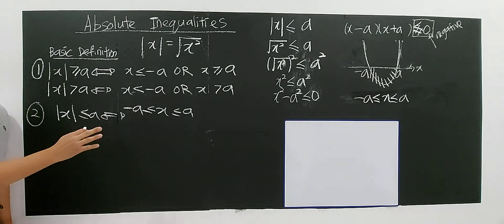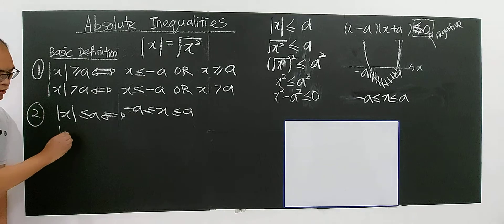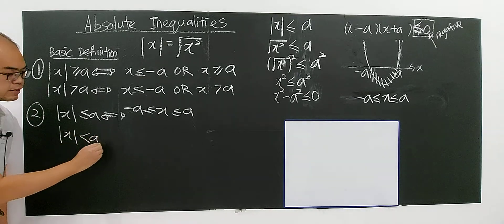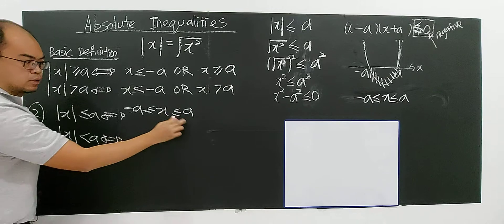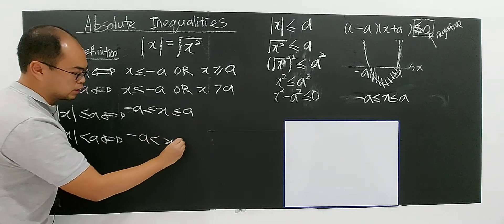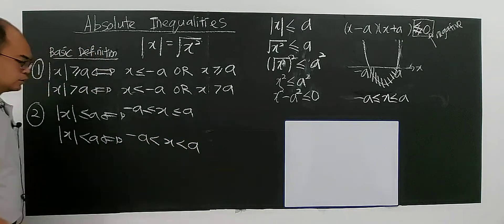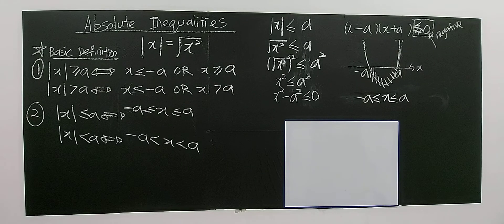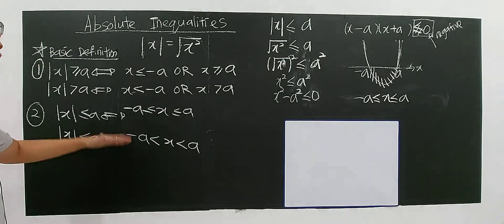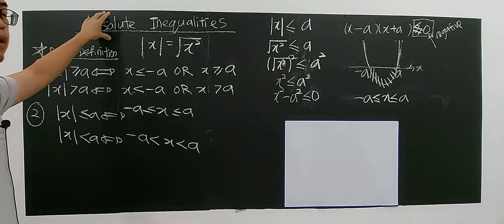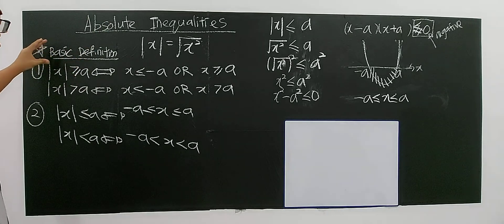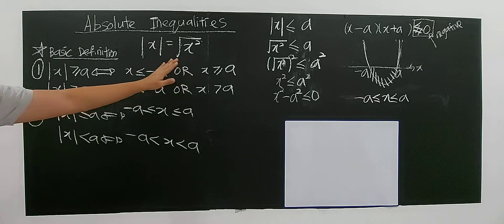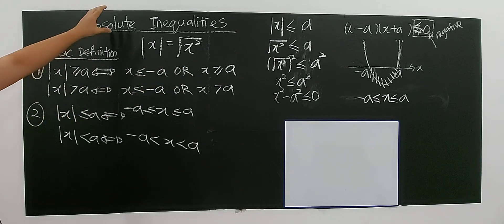This is a very important result. You have to study this. For modulus x less than or equal to a, the result is x between negative a and a. If you have strictly less than, it is still the same, just without the equal sign. This is the basic definition for absolute inequalities — every time you solve absolute inequalities, this will be your basic definition.